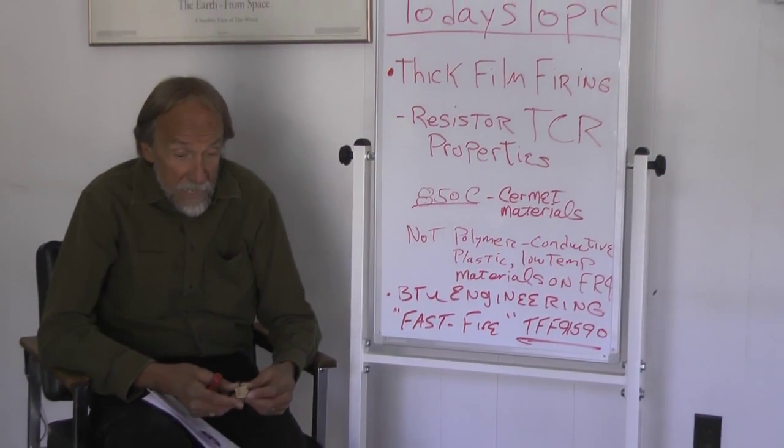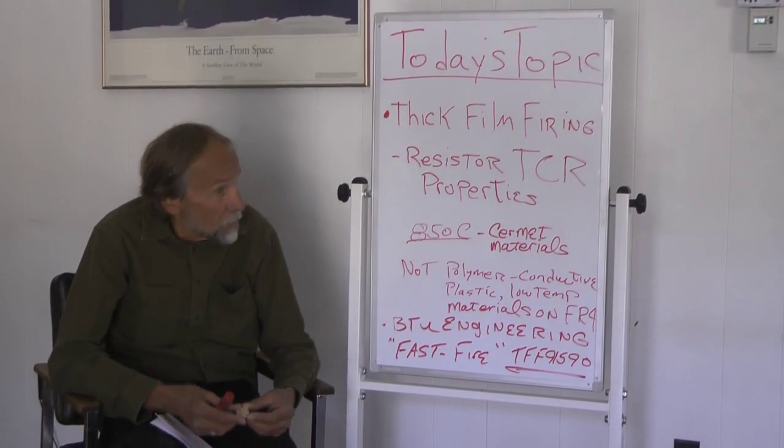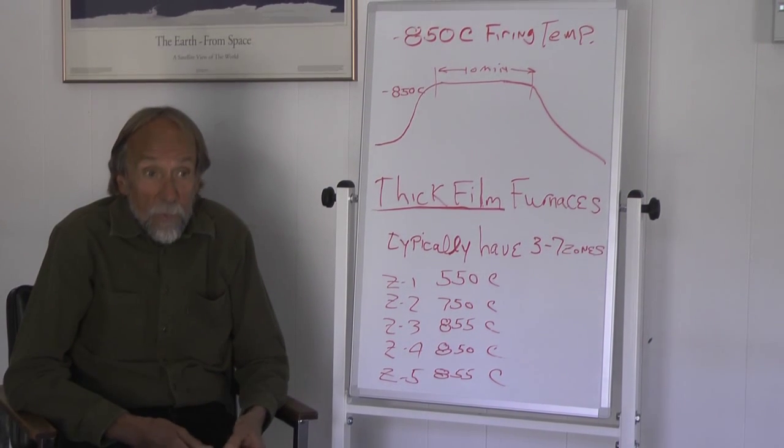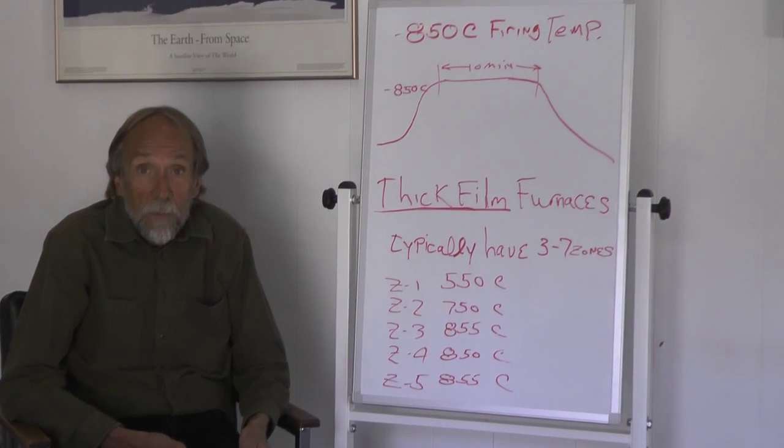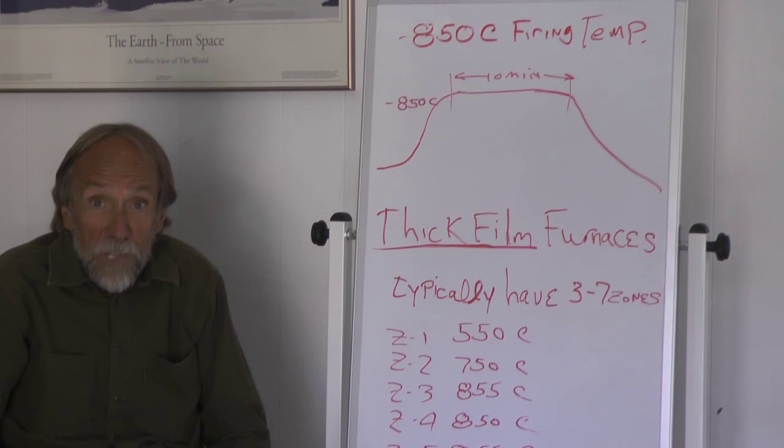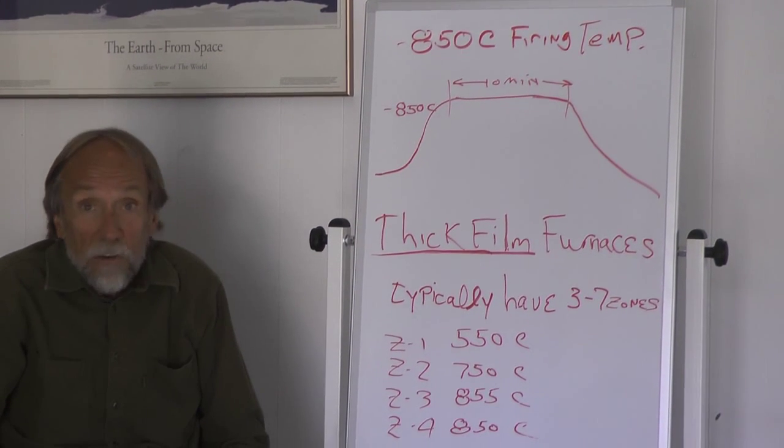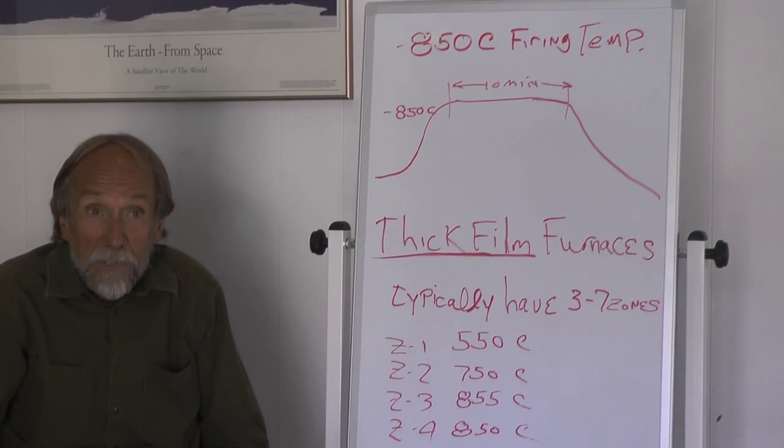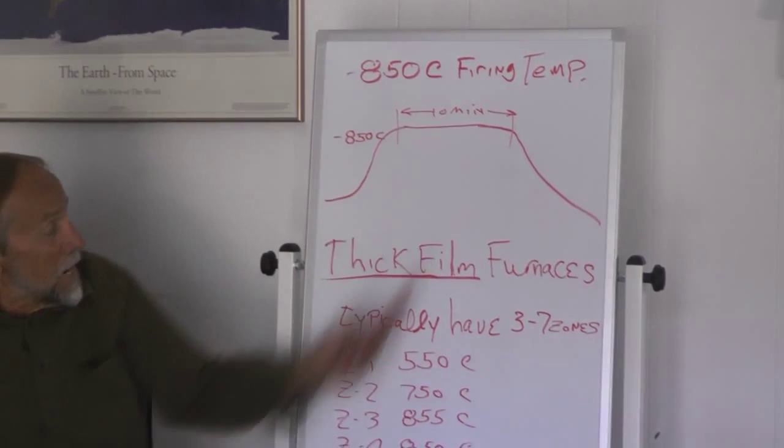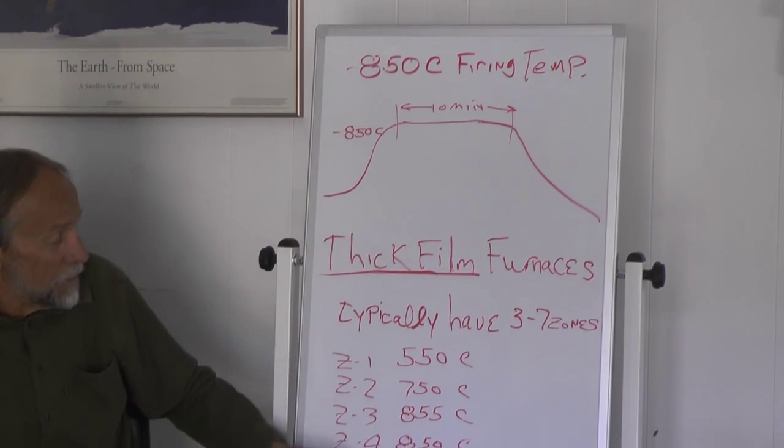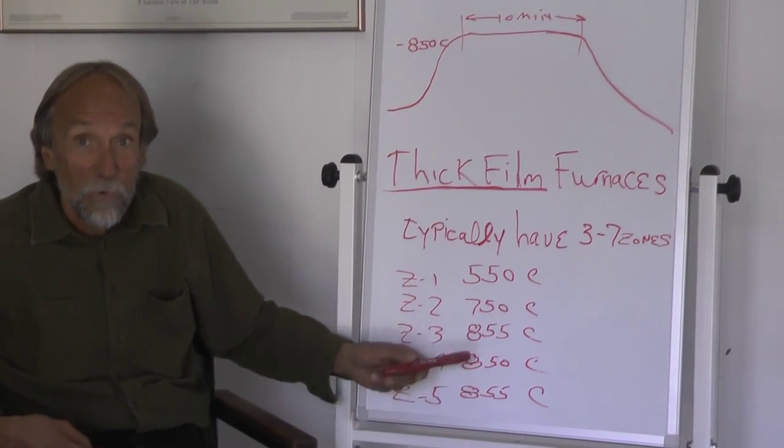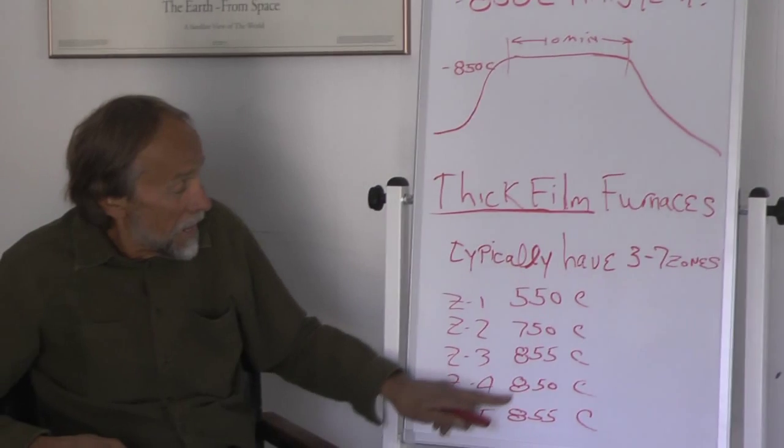Let me show you the profile that John has. I've drawn it here. It's a standard Cermet thick film profile, appears to very closely replicate what the material manufacturers data sheets say the firing condition should look like: 850 degrees C for 10 minutes. That's typically what people strive for. However, when you use the furnace this way...